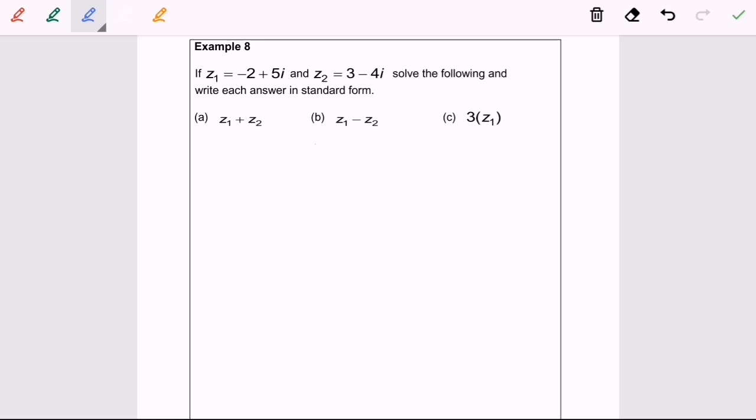Hello everyone, so now I'm going to discuss topic 1.2 complex numbers, example 8. If z sub 1 equals negative 2 plus 5i and z sub 2 equals 3 minus 4i, solve the following and write each answer in standard form. Now we have to refer to question A.